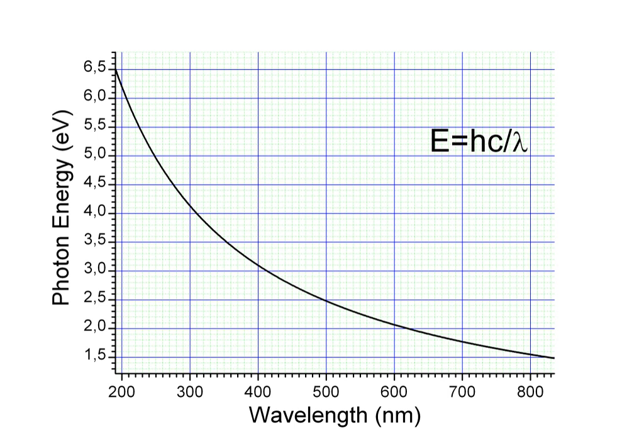0.72 eV, the energy EG required to break a covalent bond in germanium. 25 meV, the thermal energy kBT at room temperature. One air molecule has an average kinetic energy of 38 meV. 230 microeV, the thermal energy kBT of the cosmic microwave background.